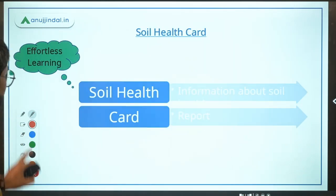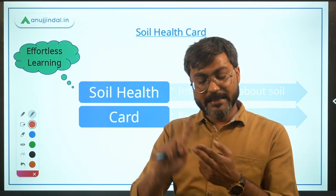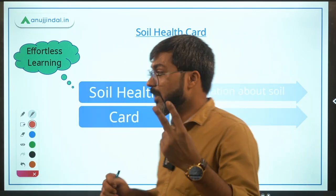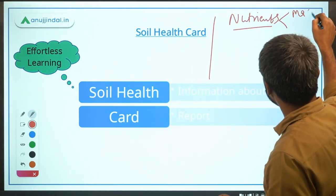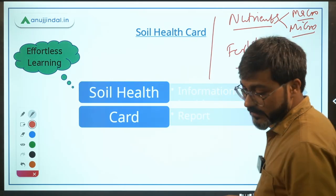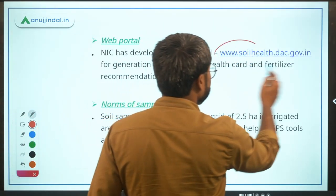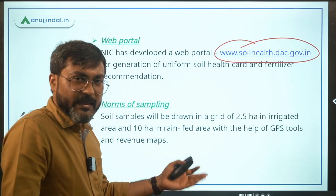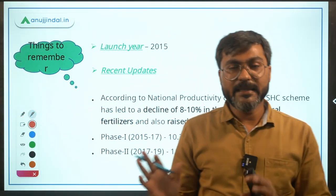Quick revision of Soil Health Card: remember the launch year 2015, the basic objective — nutrient information (macro and micro) and fertilizer usage guidance. Ministry of Agriculture and Farmers Welfare is the implementing ministry. The portal is soilhealth.dac.gov.in. Key recent update: 8–10% reduction in chemical fertilizer use and 5–6% increase in productivity as reported by the National Productivity Council.